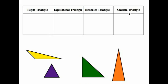Triangles are classified by their types of sides and their angles. The first type we're going to talk about is the right triangle. You can tell if a triangle is a right triangle if it has a right angle — the angle that forms a square. Looking at the four triangles, only one has a right angle, and we can see that square inside that triangle.